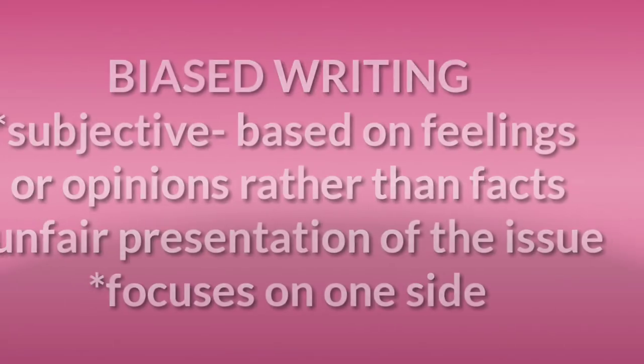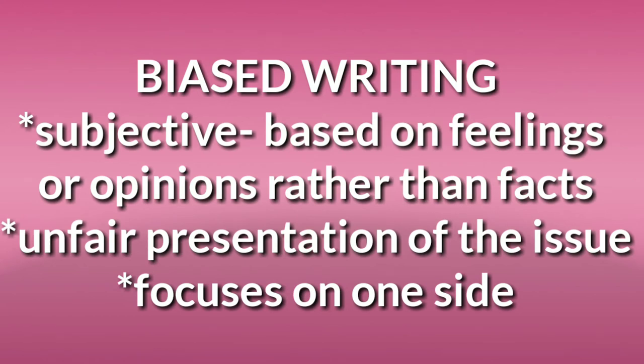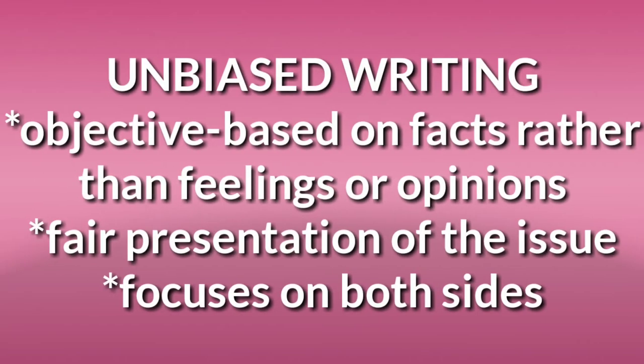Biased writing is subjective — based on feelings or opinions rather than facts. It is personal and presents an unfair presentation of the issue, focusing on one side. On the other hand, unbiased writing is objective — based on facts rather than feelings or opinions. It is empirical, presents a fair presentation of the issue, and focuses on both sides.